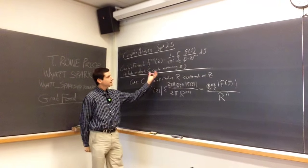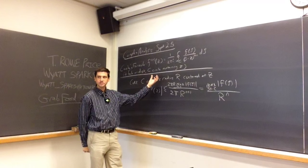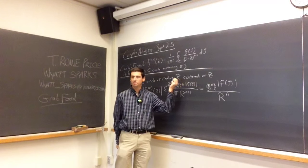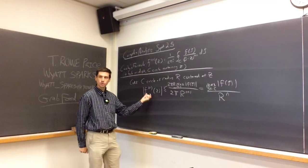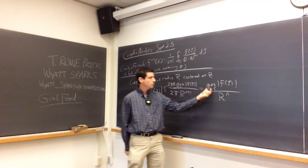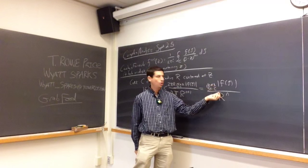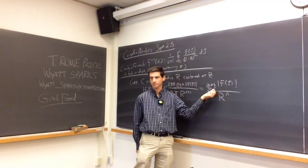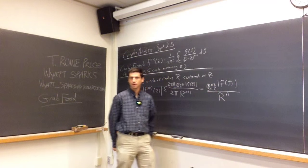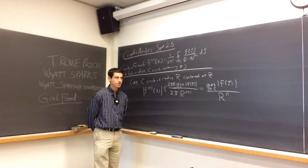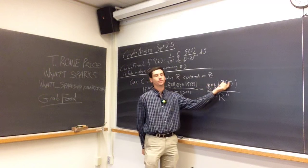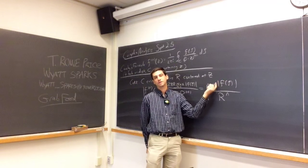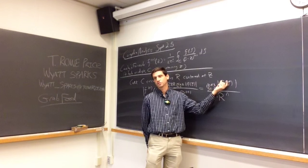So this is just going to be the maximum of the absolute value of f of zeta, zeta on the circle, divided by r to the n. It tells us that if we have a holomorphic function on a disk, and c is a circle about the point z of radius r, then the derivative cannot be too large. We're taking the maximum over the circle of radius r. The larger circle you can take — but you have to be careful because the maximum value could change as you take a circle larger and larger.